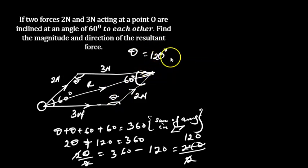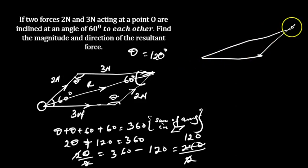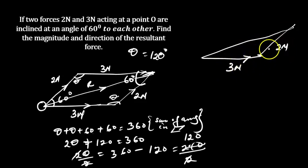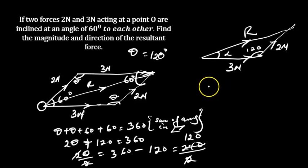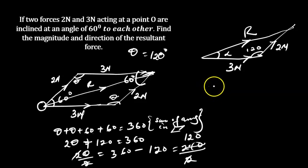With theta equal to 120 degrees, we already have a triangle defined. This side is three newtons, this side is two newtons, and there's an angle alpha here. The angle at the opposite vertex we've defined as 120 degrees. So we are left to solve for R. Using the cosine rule, remember that C squared equals A squared plus B squared minus 2AB cos C.